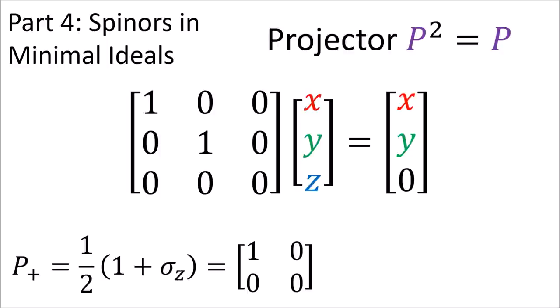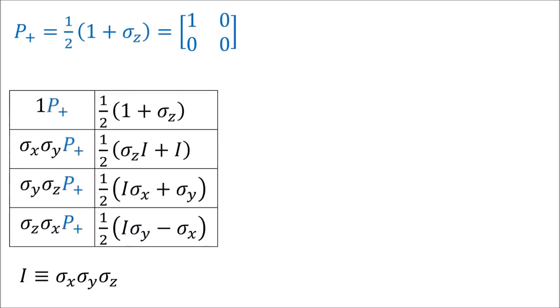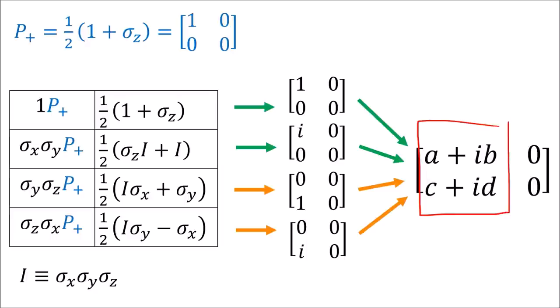There's also projectors in the Clifford algebras for 3D space and 4D spacetime. We get ideal sets by applying these projectors to our Clifford algebra. Here we see that by projecting the even elements of the Clifford algebra we get the up and down spinor states from part one which are kind of like a two by one complex column.